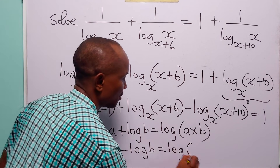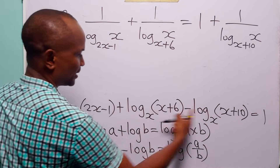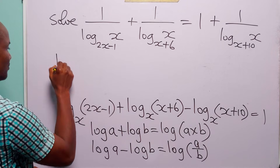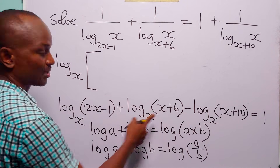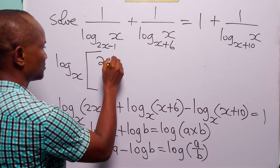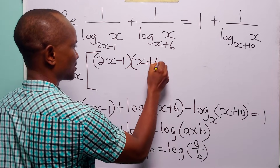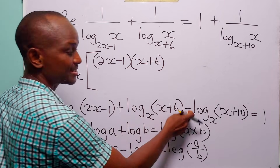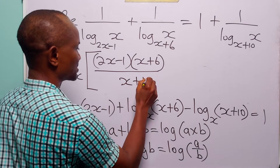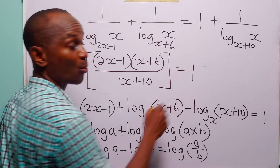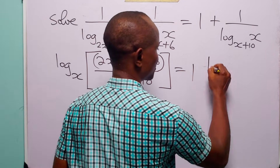Remember that log a plus log b equals log(a times b), and log a minus log b equals log(a over b). So when we combine these, we have log to base x of (2x minus 1) multiplied by (x plus 6), over (x plus 10), and this is still equal to 1.